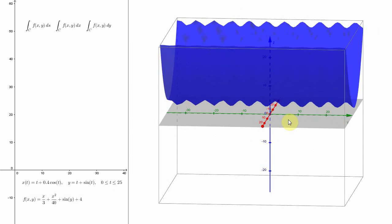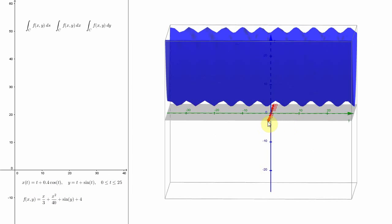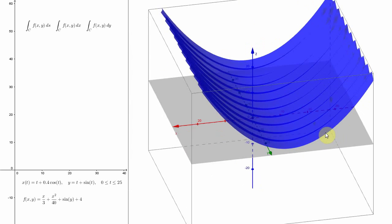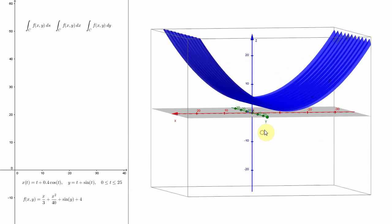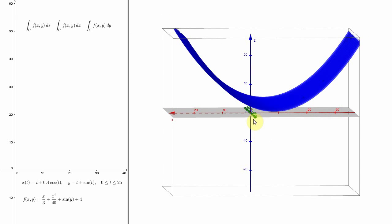If you scroll this way so that the x-axis, the positive x-axis, is pointing at you, you see basically a sine curve. The computer is not drawing that perfectly. And if you move so that the positive y-axis is facing you, you more or less see a parabola.